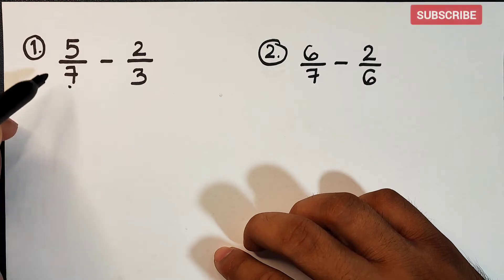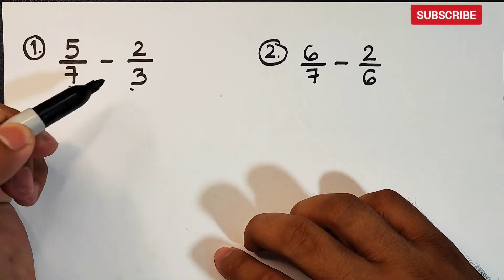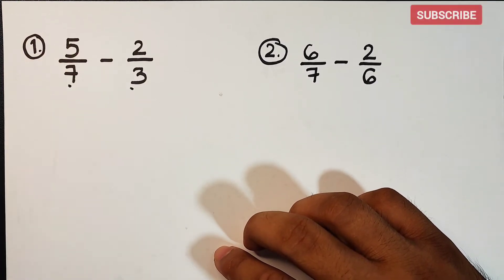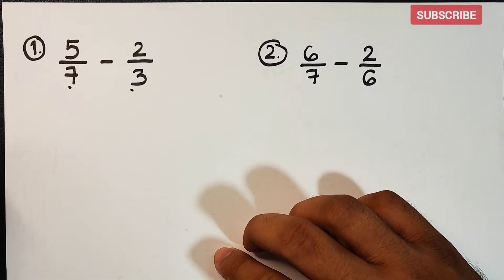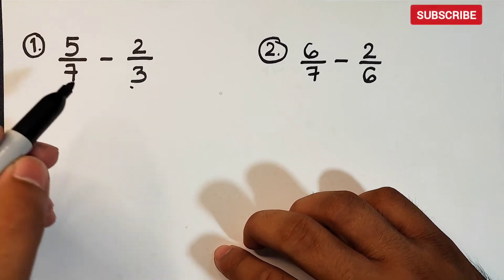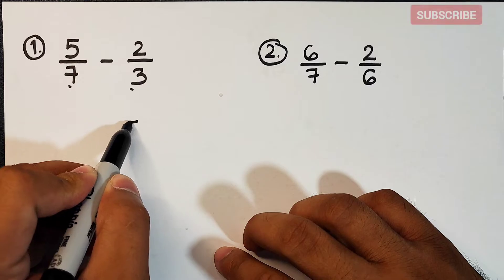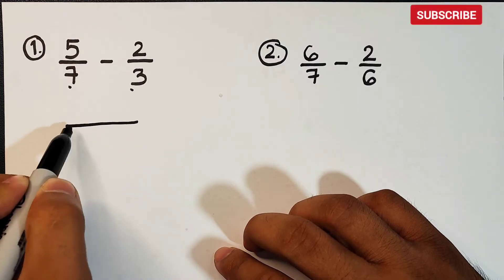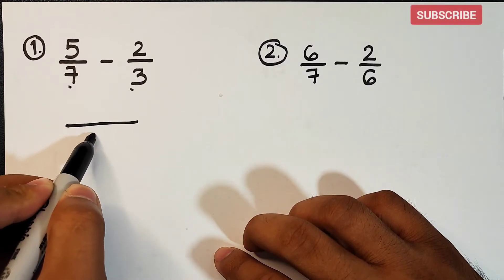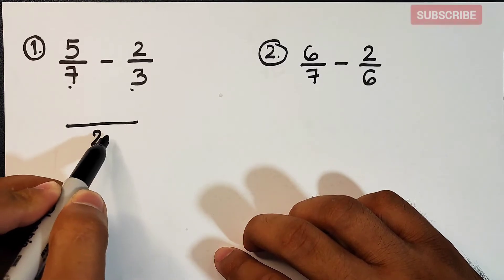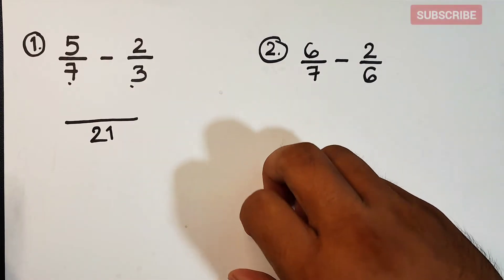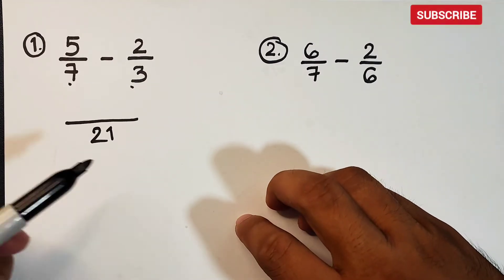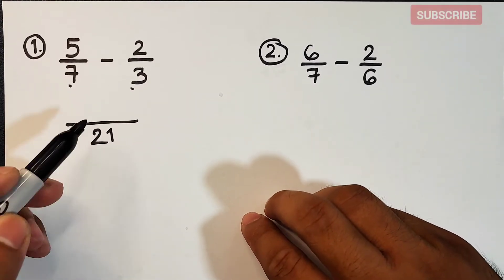Here the denominators are 7 and 3. If you use the listing method to find the LCD, it will give you the answer of 21. Now, how are we going to proceed after identifying the LCD?